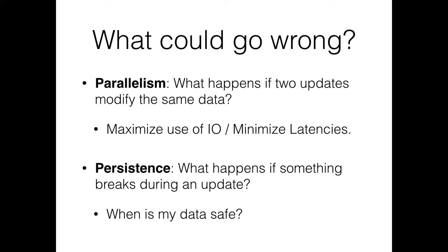When a change gets reflected on disk, there are several things that could go wrong, many of which are similar to parallelism problems. For example, if I'm doing a bank transfer from one account to another, and I decrease one person's bank account and save that to disk, then increase the other person's bank account, but my system crashes before I can save that increased account to disk, then basically that money has vanished. I want to make sure that operations get reflected in permanent storage in a safe way.